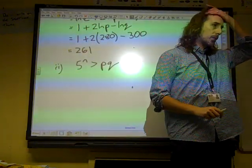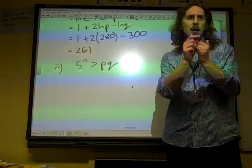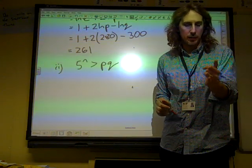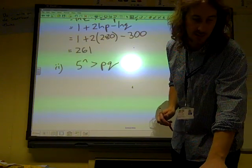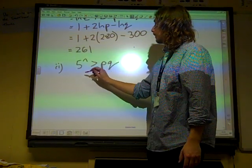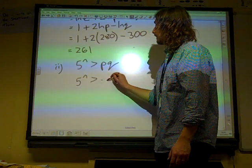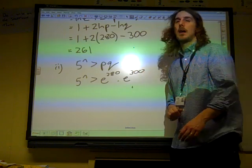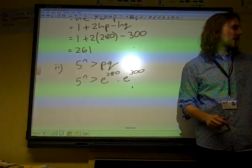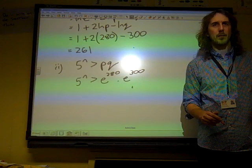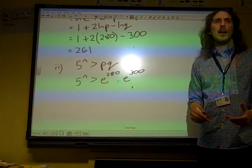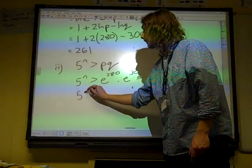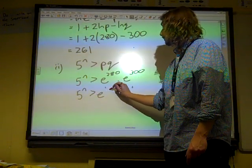Well, P times Q, we can take that straight from what we've got there. That is E to the 280 times E to the 300, isn't it? So 5 to the N is greater than E to the 280 times E to the 300. And this has gone way back to remembering indices in core 1 in the first week of your AS here. When you're multiplying two things with the same base number, you add the powers. So that's 5 to the N is greater than E to the 580.